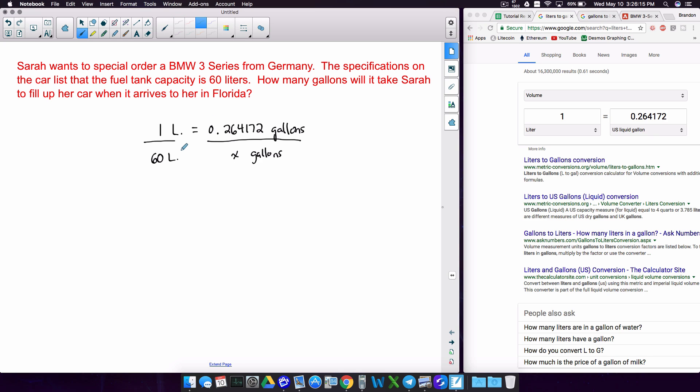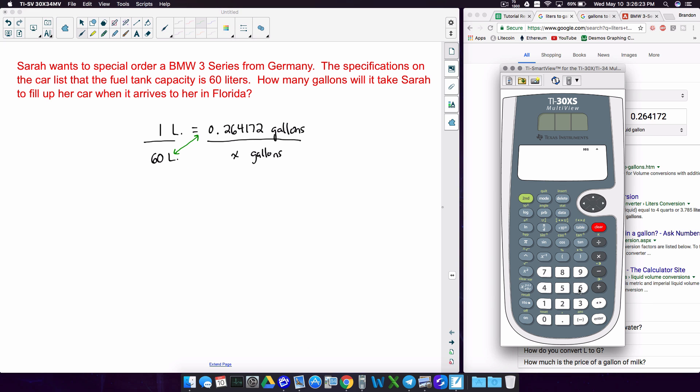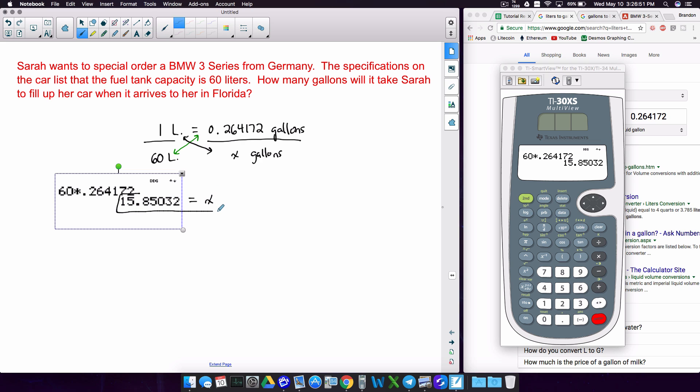Just to kind of refresh on that, we're going to take these two numbers right here. We're going to multiply them together. This is the only time you should be cross-multiplying when you have a fraction equal to a fraction. So we have 60 times 0.264172. Make sure I type that in right. And so we get that number right there. Now, that is going to be equal to the other cross-product, of 1 times x. Well, 1 times x is x. So just like that, we're done with this problem.